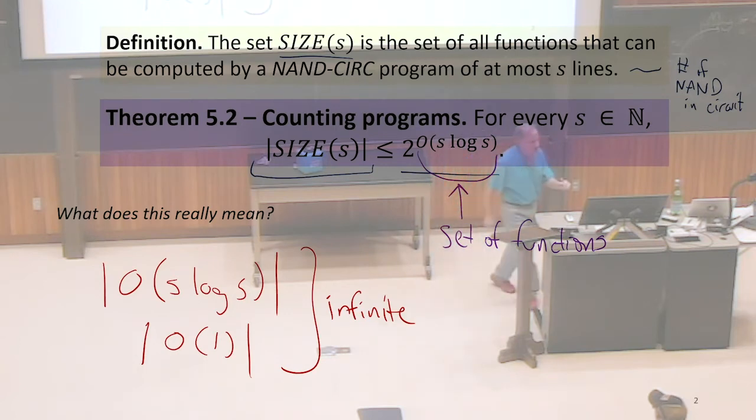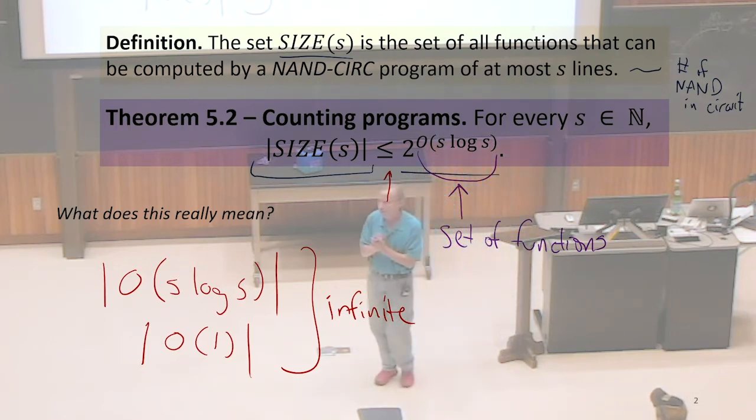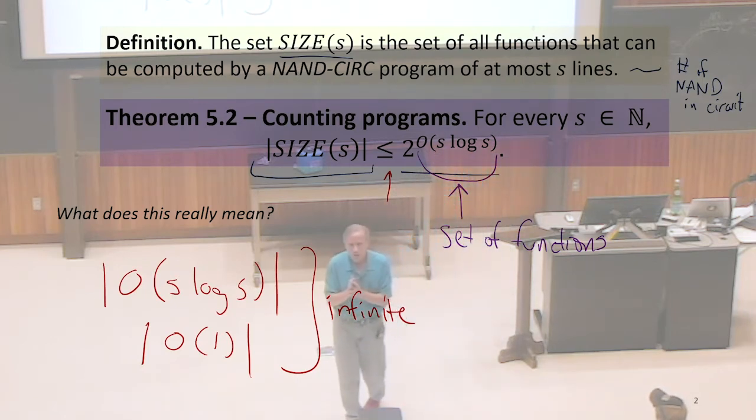So that definitely doesn't make sense as the exponent either. Especially it better not make sense if it's infinite and we've got a less than or equal to here. Because, well, I guess it would be everything, right? It wouldn't be an interesting number. So what else could it mean?